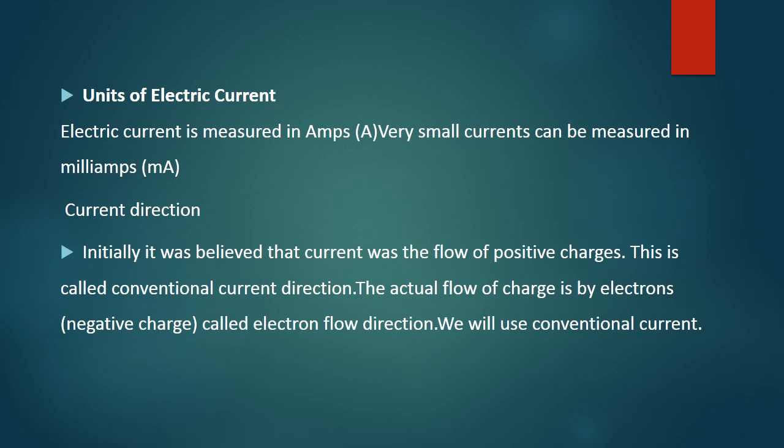The positive charges flow in one direction, and that direction is termed as conventional current direction. But negative charges — the electron — is the actual flow from one point to another point, from high potential to low potential. In nature, everything flows from high to low, so the electrons flow from high potential to low potential. The force which flows opposite to the flow of electrons is called current. It is the electron that flows from one point to another point, and the opposite direction of the current flow is called the conventional current direction.